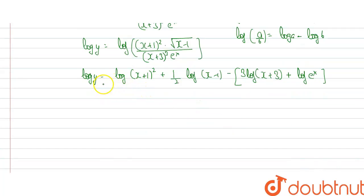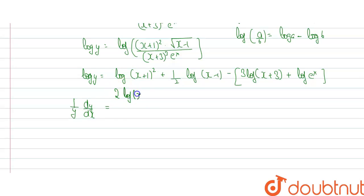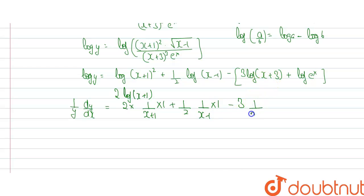On further solving, we will now differentiate this. So the differentiation of log y will give 1 by y times dy by dx. Differentiating the right side: 2 into 1 divided by x plus 1, plus half into 1 divided by x minus 1, minus 3 into 1 divided by x plus 3. Differentiation of e to the power x gives e to the power x, which cancels, so we get 1.